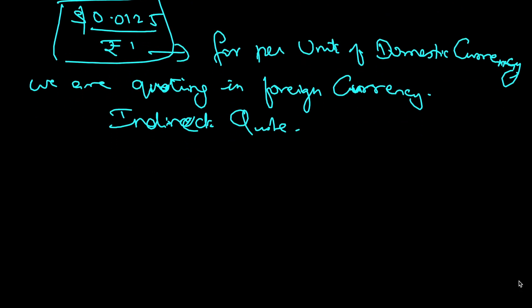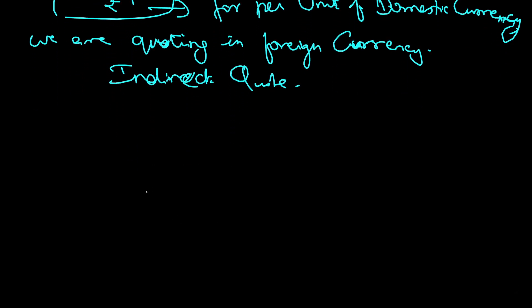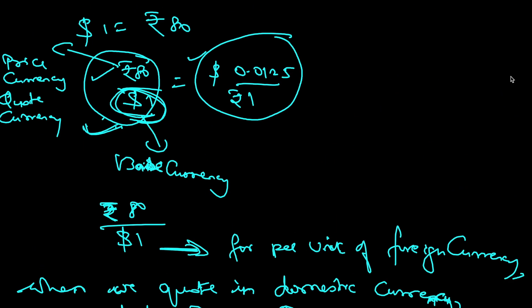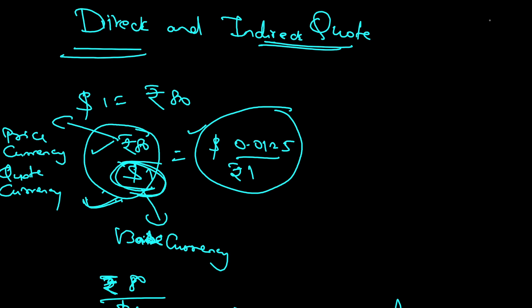Now, what if domestic currency is not involved at all? For example, if I say one dollar is equal to 1.05 euro — is this a direct quote or indirect quote? Since there is no home currency involved, this is simply called a cross rate. That is the basic difference between direct quote, indirect quote, and cross rates.